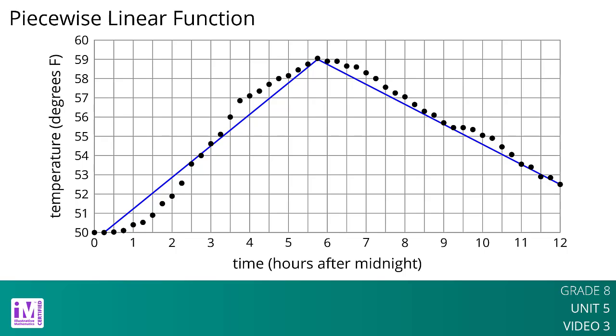In this example, the piecewise function has only two pieces, but piecewise functions can have as many pieces as needed depending on the goals of the person creating the model. Here, for different intervals of input, the output is changing at different approximately constant rates, so a different line is used for each interval.